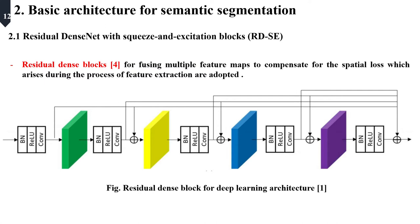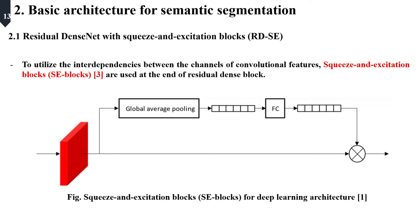To utilize the interdependencies between channels of convolutional features, squeeze and excitation blocks are used. SE blocks are concatenated at the end of each residual dense block.